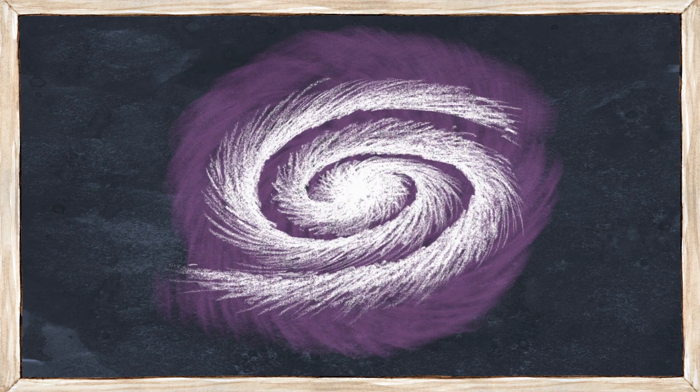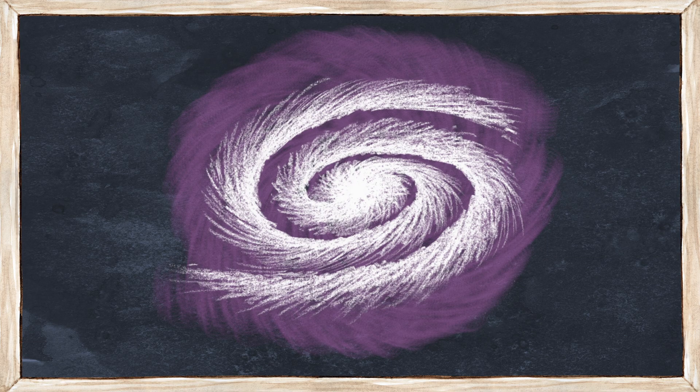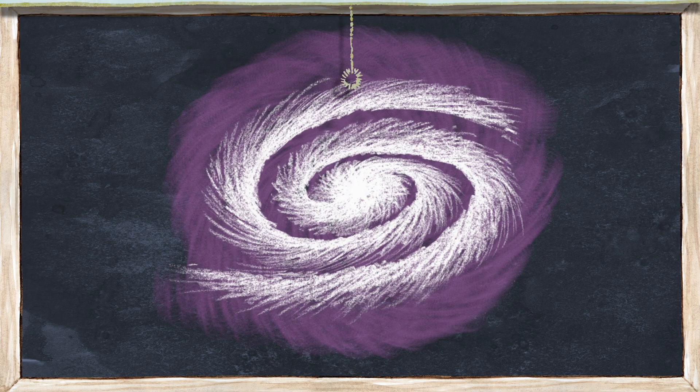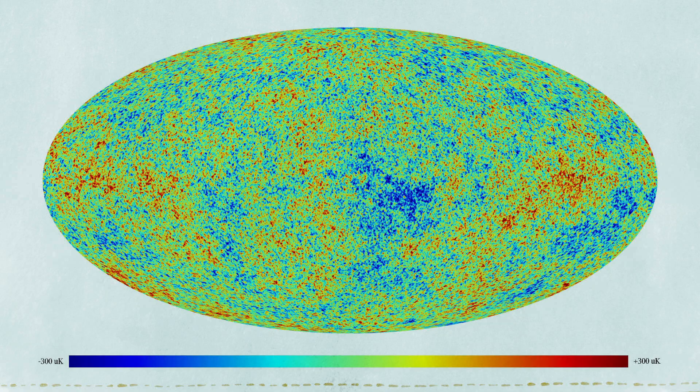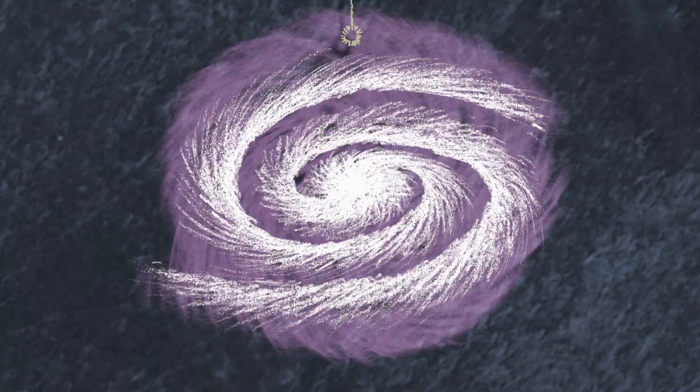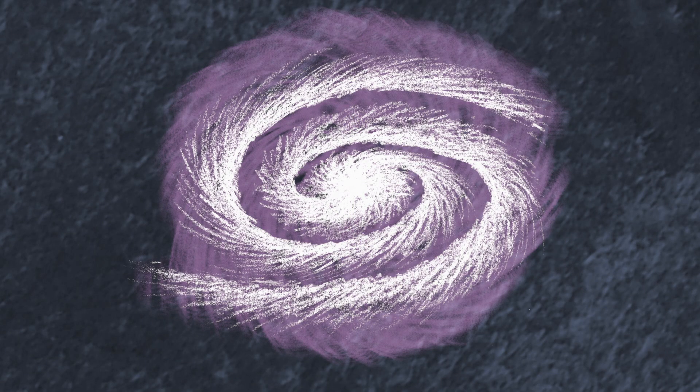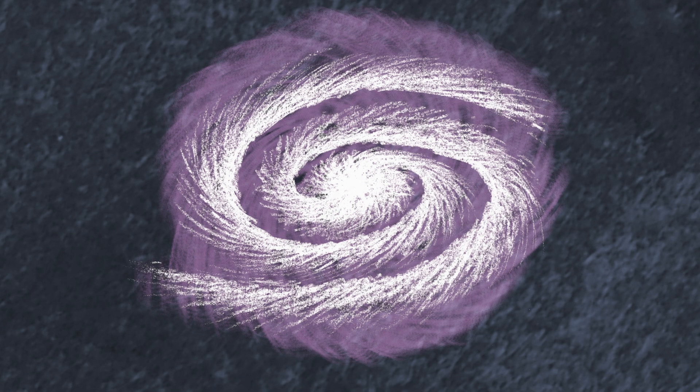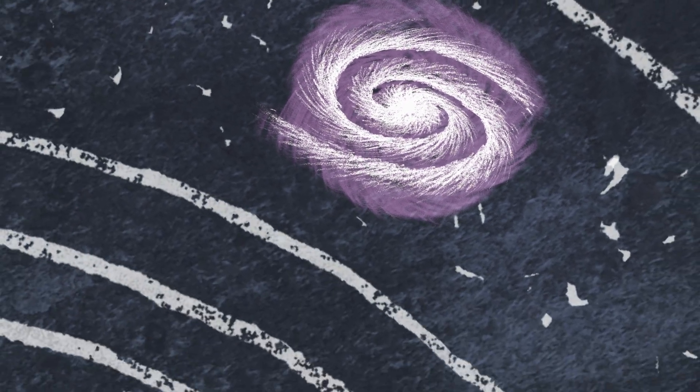So there must be stuff there that we can't see. We call that stuff dark matter. The best evidence for dark matter today comes from measurements of something called the cosmic microwave background, the afterglow of the Big Bang. But that's another story. All of the evidence we have says that dark matter is there, and accounts for much of the stuff in those beautiful spiral galaxies that fill the heavens.